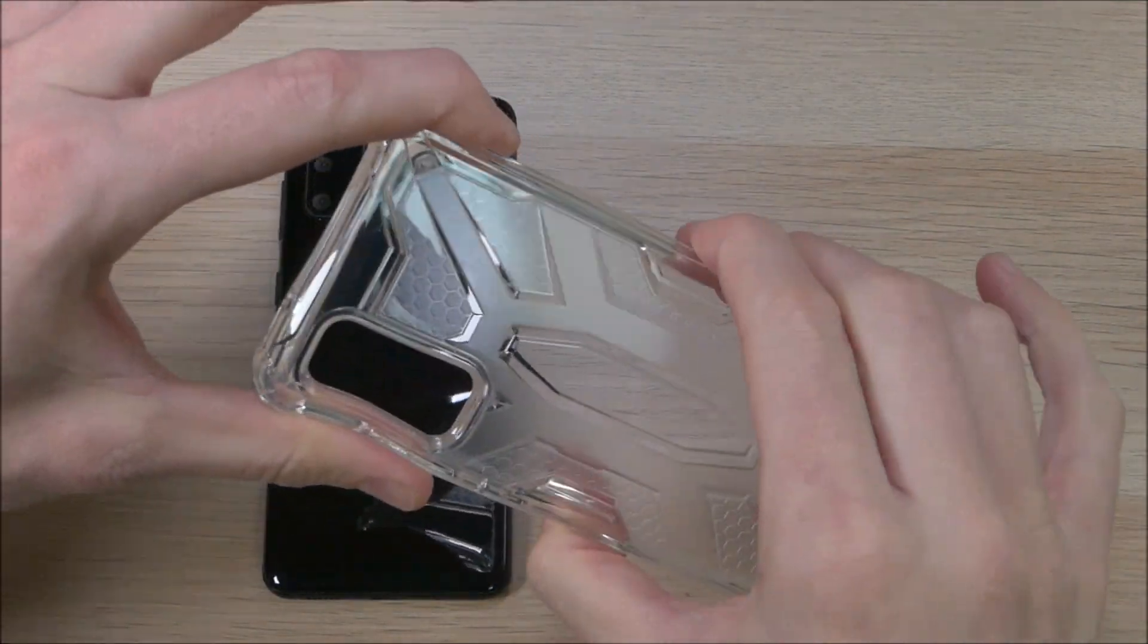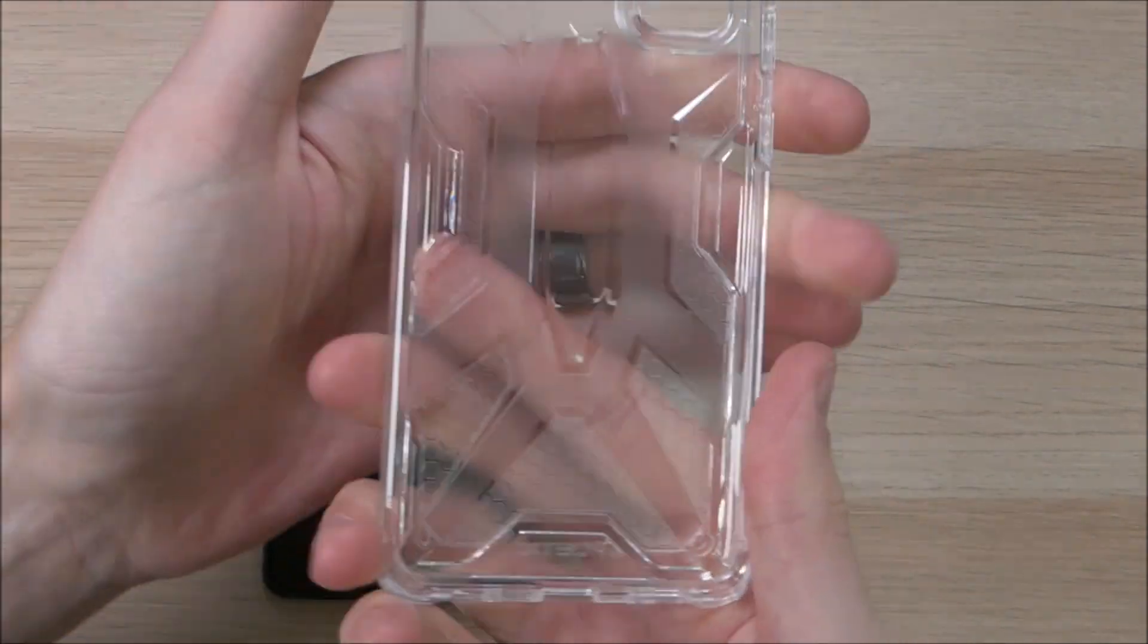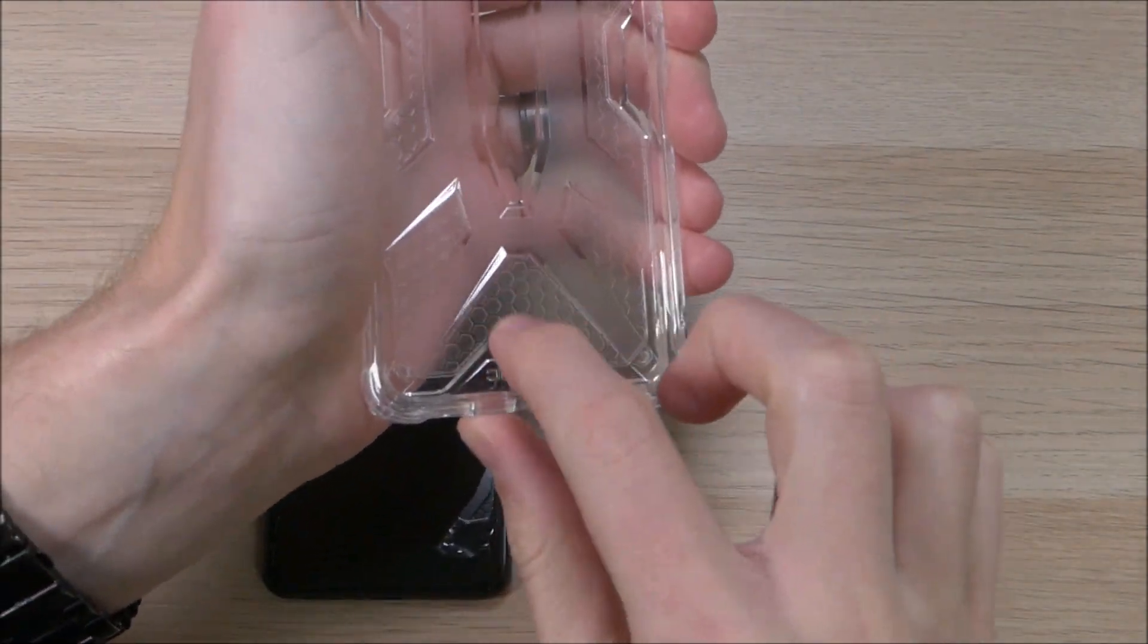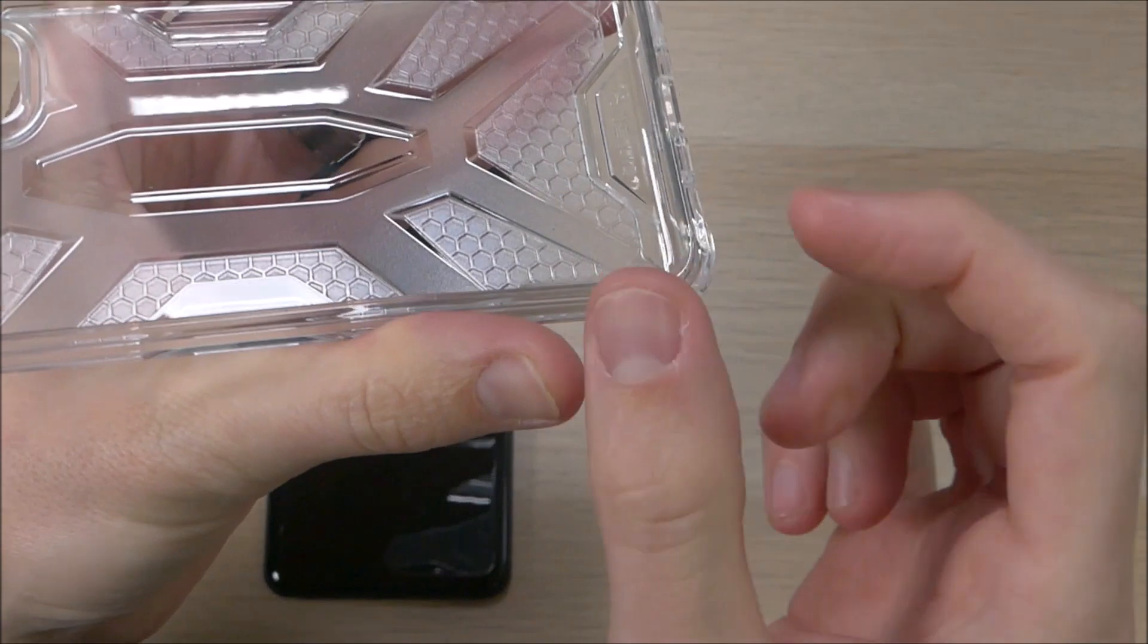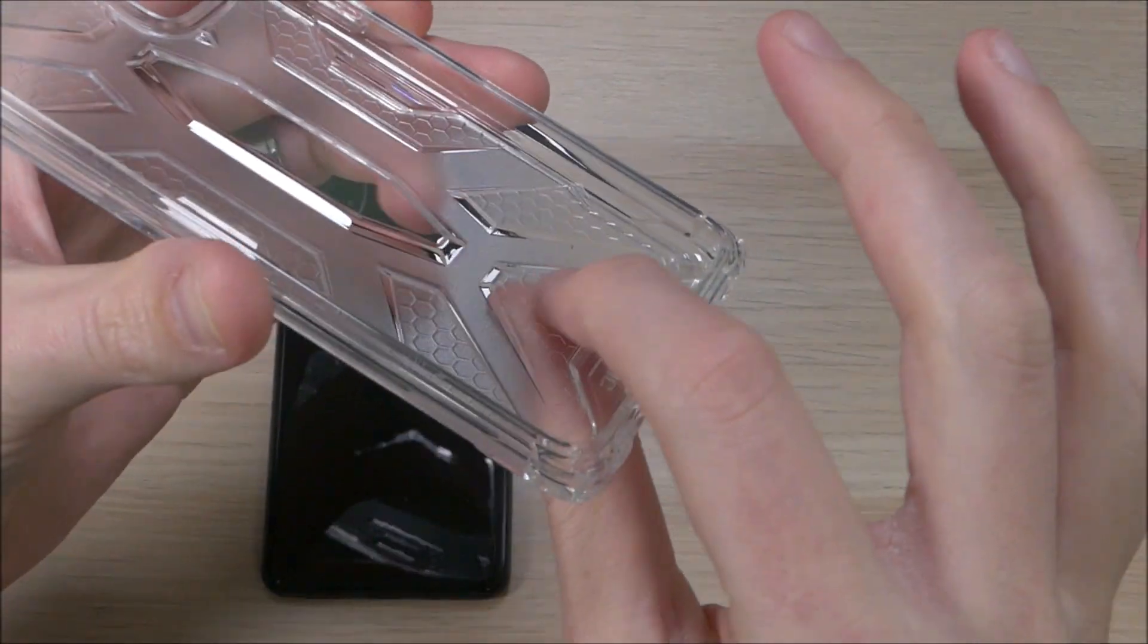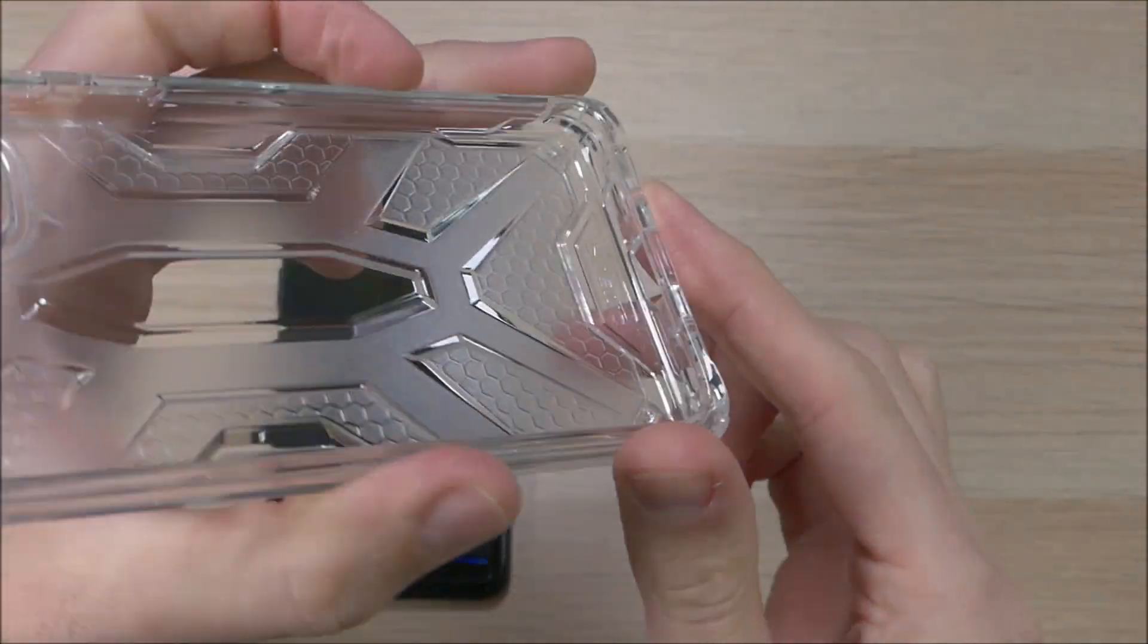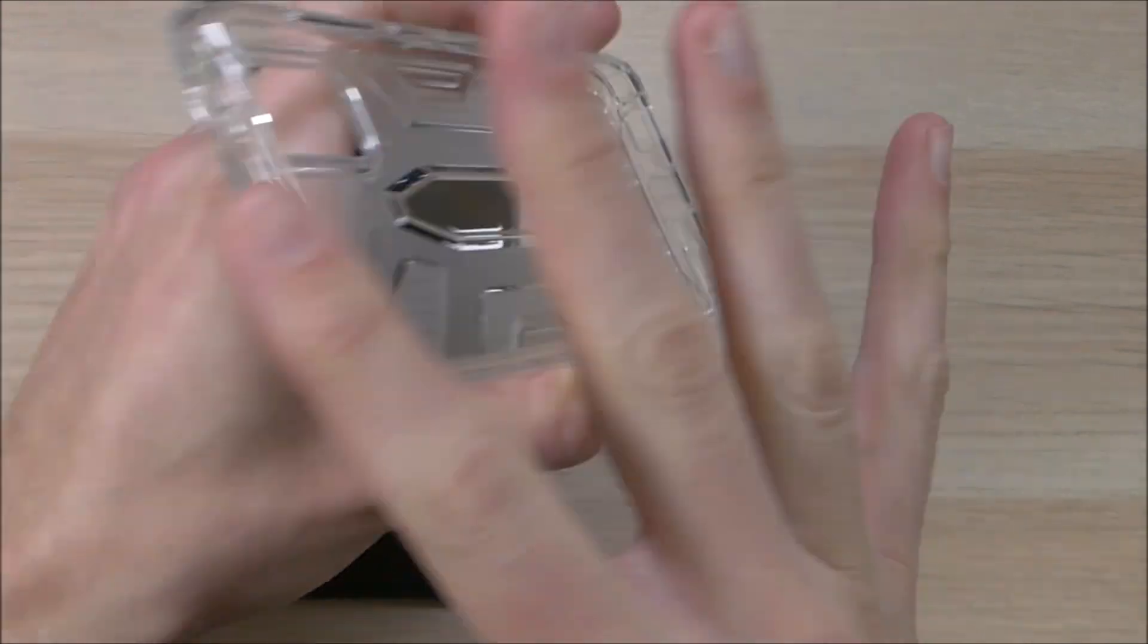Now the case is a softer TPU case around the outsides. The back here is a little bit of a harder TPU and it does have some texture. That texture is however on the inside. That texture makes little air pockets that make it so if your device were to hit flat on its back, it would protect those because it's providing those air pockets essentially as airbags for your phone. It also has those little airbags here in the corners and across the bottom and the top.